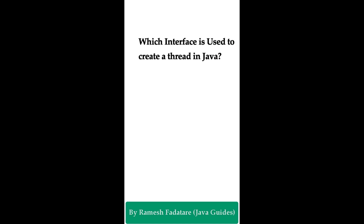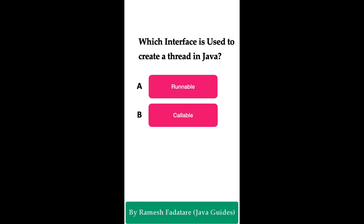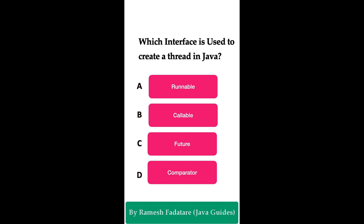Welcome to Java Quiz Series. Here is one more question: which interface is used to create a thread in Java? Option A: Runnable interface. Option B: Callable interface. Option C: Future interface. Option D: Comparator interface. You have five seconds to answer this question.